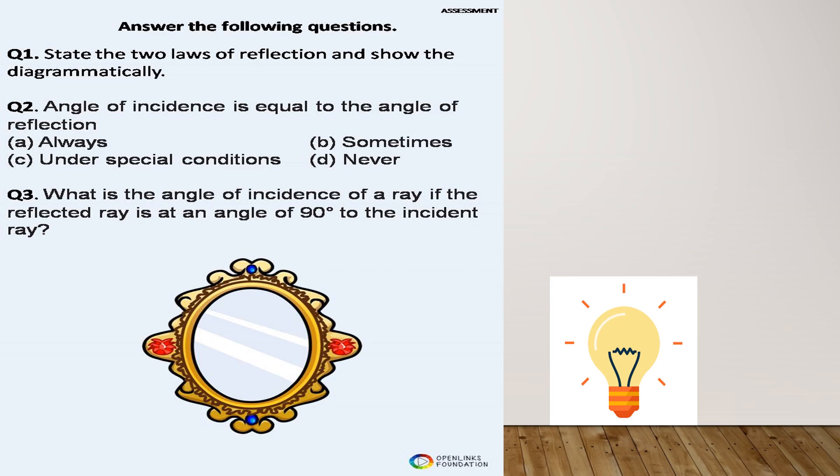The second law of reflection states that the incident ray, the normal, and the reflected ray all lie in the same plane. They all meet at one particular point called the point of incidence. These are the two laws of reflection.